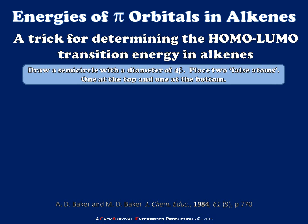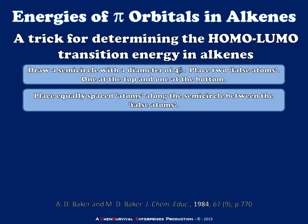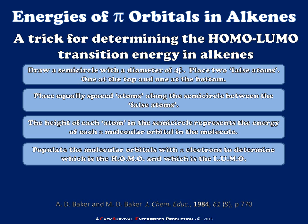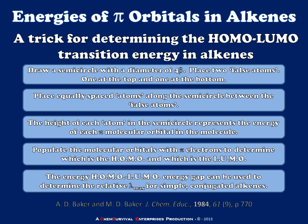The first step is to draw a semicircle with a diameter of 4 beta, where beta is simply a constant used for these types of alkenes. We place two false atoms, one at the top and one at the bottom of the semicircle. Next, we place equally spaced atoms along the semicircle equaling the number of atoms in the pi system we'd like to characterize. In the third step, we use the height of each atom within the semicircle and trigonometry to calculate the energy of the pi molecular orbitals. We then populate these molecular orbitals with pi electrons to determine the HOMO and LUMO, and finally use the HOMO-LUMO energy gap to predict how wavelength absorption changes as we extend conjugation.